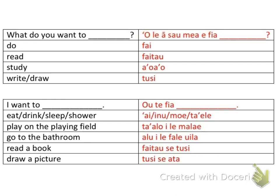Moving on to the next one: 'I want to' is 'ote fia.' Depending on the action — to eat is 'ai,' so 'ote fia ai'; drink is 'inu,' so 'ote fia inu'; I want to sleep is 'ote fia moe'; and I want to shower is 'ote fia ta'ele.'